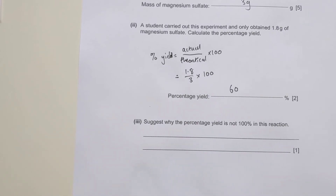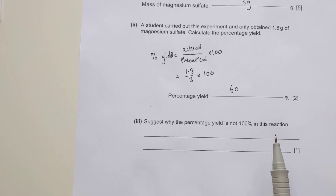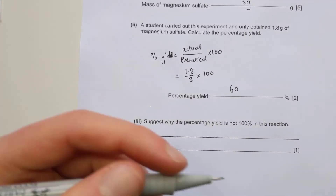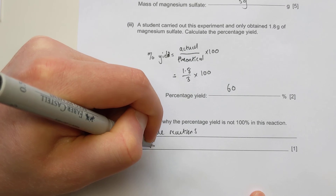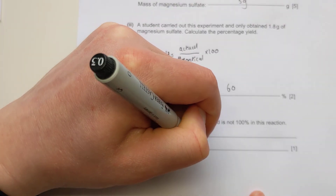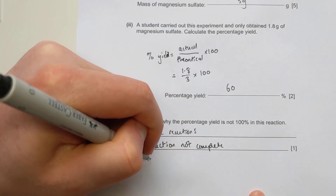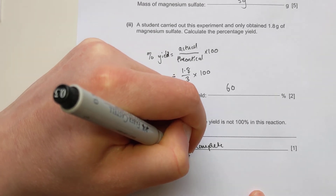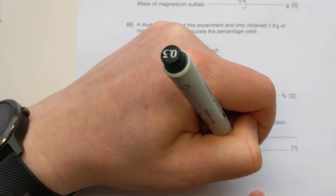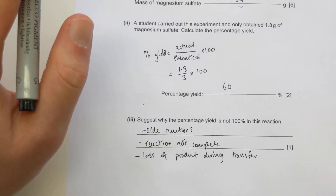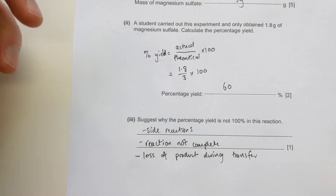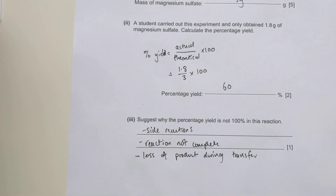The final part is a one-mark theory question: suggest a reason why the percentage yield is not 100% in this reaction. It's quite open - you could talk about side reactions, the reaction not being complete, or loss of product when transferring it from the flask to be weighed. The mark scheme also accepts: loss due to fizzing when CO₂ is produced, loss when filtering, or not measuring correctly. Those are the main ones in your notes.